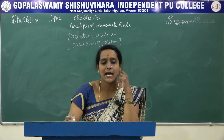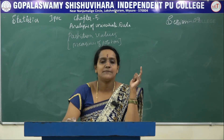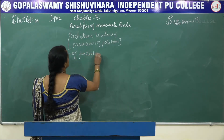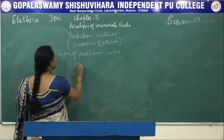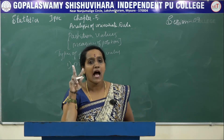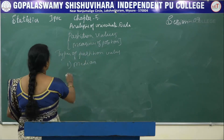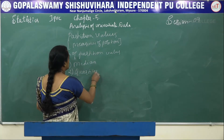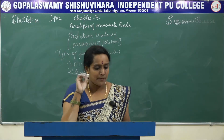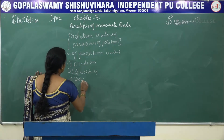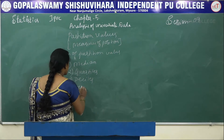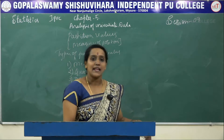In partition values, we have four types. First one is median — the middlemost value that divides the data into two equal halves. Second is quartiles, which divide the data into four equal parts. Third is deciles, which divide the data into ten equal parts. And fourth is percentiles, which divide the data into one hundred equal parts.